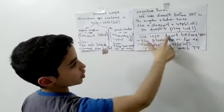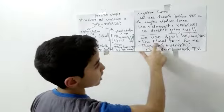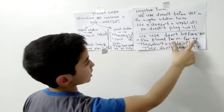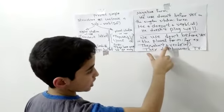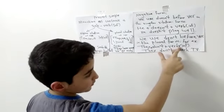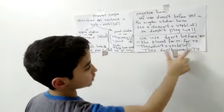We use don't before verb in the plural form. For example, they plus don't equals they don't, plus verb infinitive. They don't watch TV.